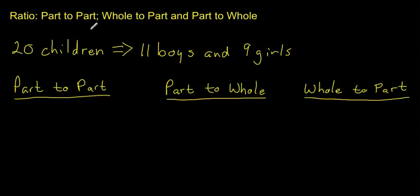When we're talking about ratio, you have to remember that we're comparing two things. For example, have a class of 20 children, and the class is made up of 11 boys and 9 girls. We have two things that we can compare, but we also have the class which has 20 children.